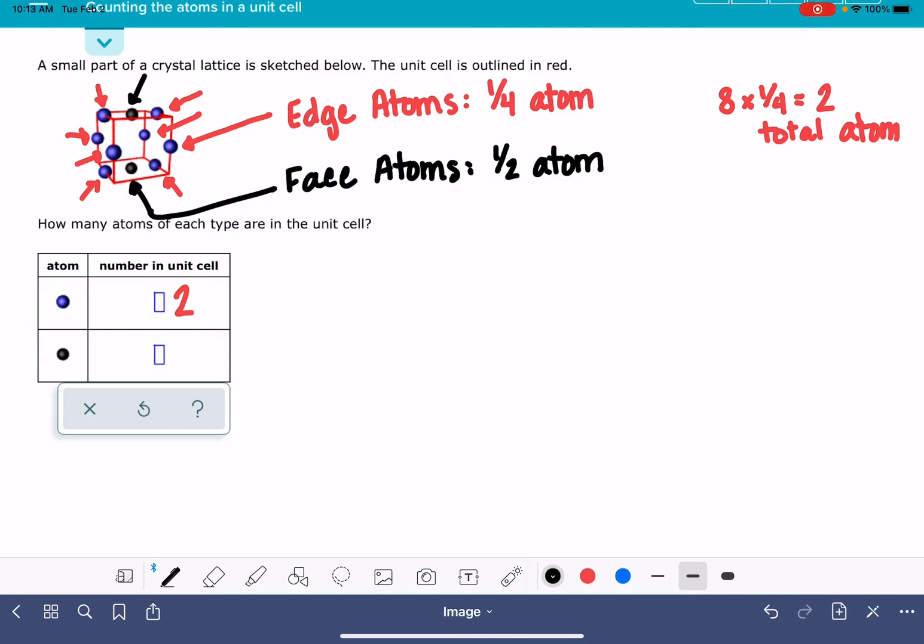I have two total face atoms. Each one has one-half inside the unit cell. So there's going to be one total atom sitting inside the unit cell between both of those two black atoms.